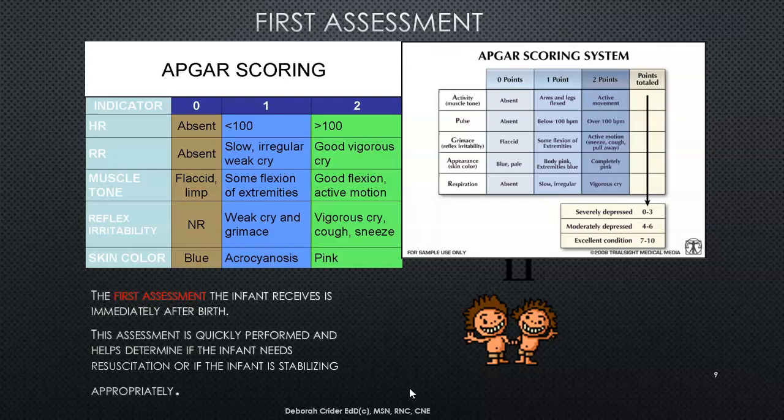Then comes reflex irritability — the reflex response when you stimulate the baby. If you're vigorously drying them off with tactile stimulation and get no response, score zero. If you get a weak cry and some grimacing, score one. If they're crying vigorously, coughing, sneezing, and interacting with their environment, score two. The last indicator is skin color: if the baby is blue, score zero; if they have acrocyanosis, score one; if they're pink, score two. If they're pale, that's considered the same as blue — score zero.